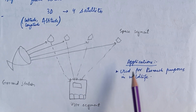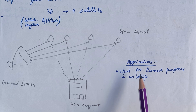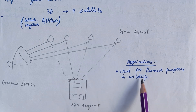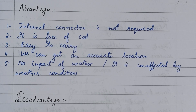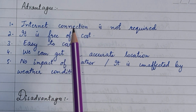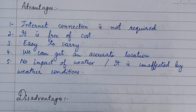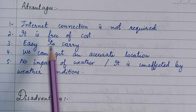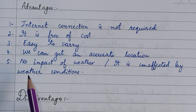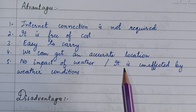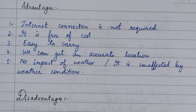GPS applications are used for research purposes in wildlife. Advantages of GPS include: internet connection is not required, it is free of cost, easy to carry, we can get an accurate location, and it is unaffected by weather conditions.